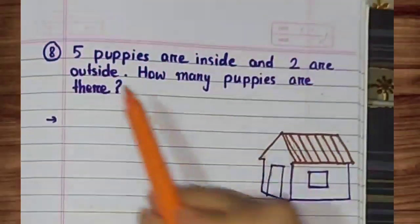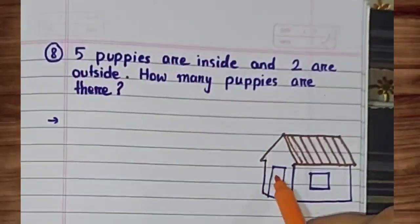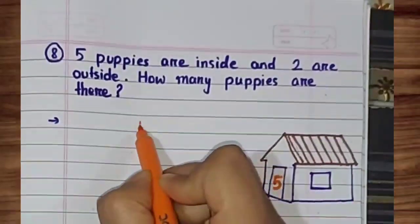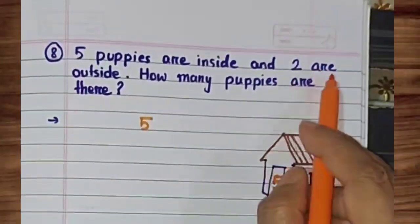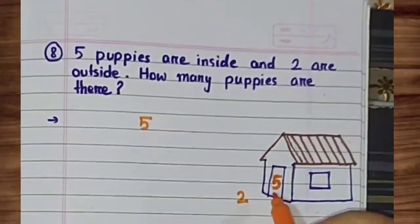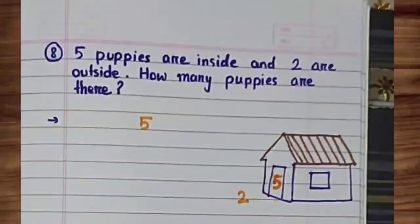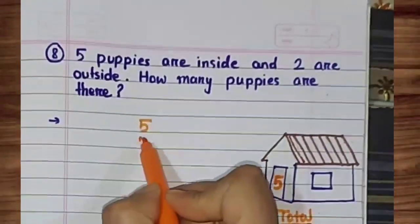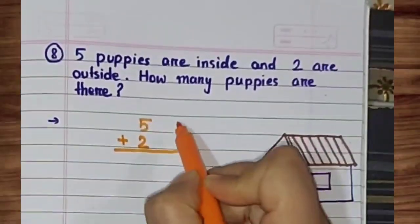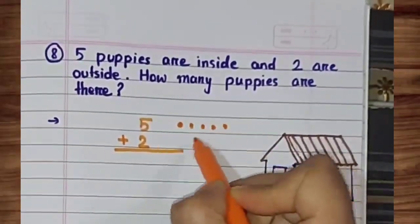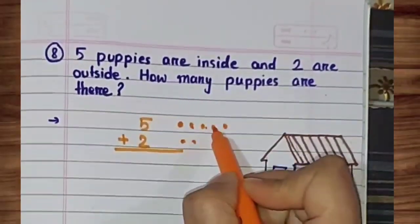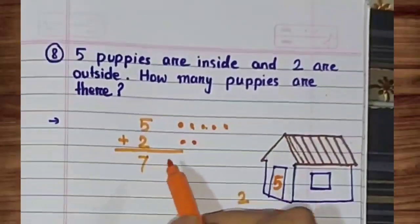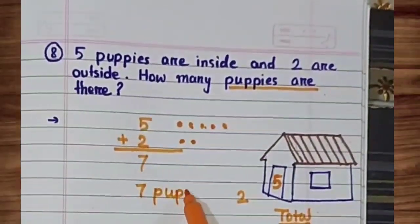In the next question, five puppies are inside and two puppies are outside. How many puppies are there? This question mein total puppies ke number puche ga hai. Total kitna puppies hai? Five plus two puppies. By counting the number of dogs, it is seven. There are seven puppies.